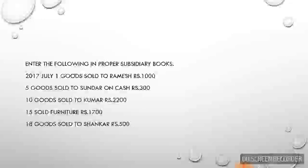Enter the book. In 2017, July 1st: goods sold to Ramesh. On the 5th, goods sold to Sundar. On the 10th, goods sold to Kumar. On the 15th, goods sold to Furnitures. On the 18th, goods sold to Shankar.